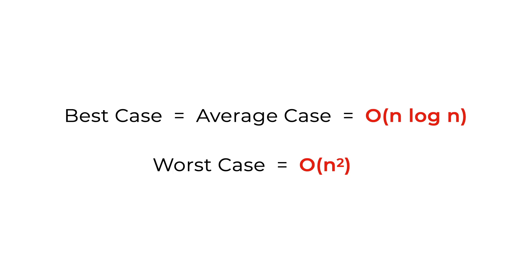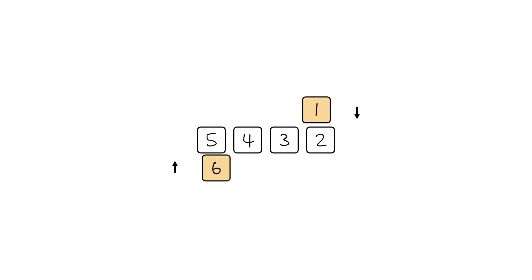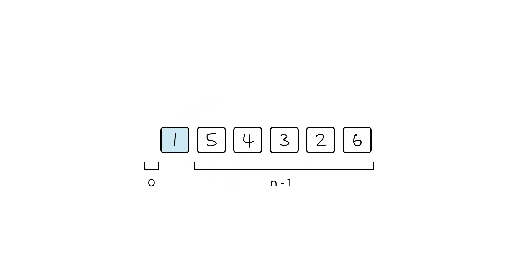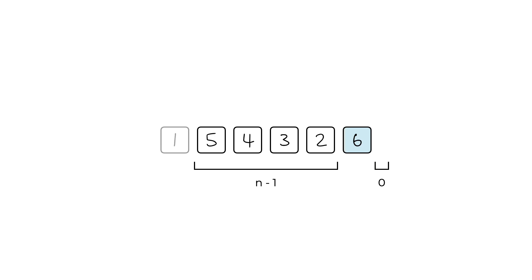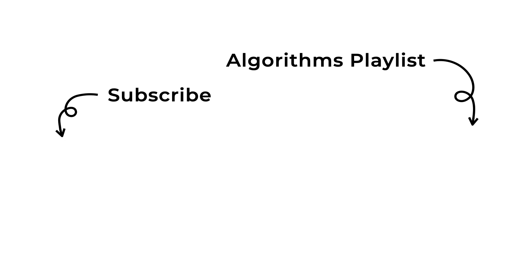To illustrate: if the pivot is the rightmost element and we partition a reverse-sorted array, we get two partitions — one of size n minus one and another of size zero. Repeating this partitioning process until low is larger than high means we do this n times, and inside each iteration i and j scan through all elements — another n iterations — giving O(n²) time complexity. That's all for today's video; I hope you found it useful. Check out my algorithms playlist, and see you next time!